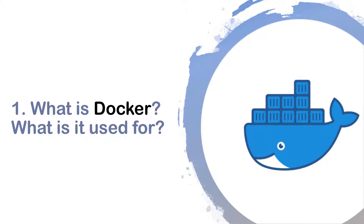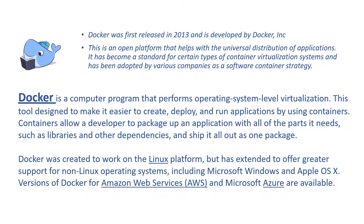First, let's talk about Docker. What is Docker and what is it used for? Docker was first released in 2013 and is developed by Docker Incorporation. This is an open platform that helps with the universal distribution of applications. It has become a standard for certain types of container virtualization systems and has been adopted by various companies as a container strategy. Docker is a computer program that performs operating system level virtualization — a tool designed to make it easier to create, deploy and run applications by using containers. Containers allow a developer to package up an application with all the parts it needs, such as libraries and other dependencies, and ship it all out as one package.